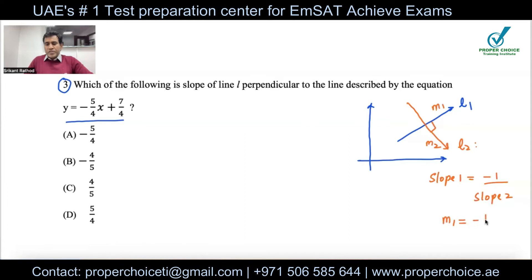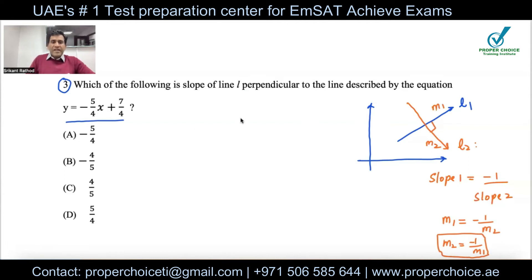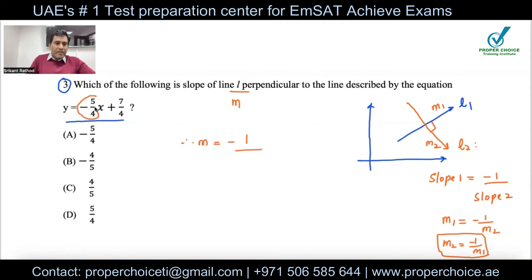It doesn't matter which slope is given; the relationship is m₁ = −1/m₂, or equivalently m₂ = −1/m₁. Applying this here: the slope of line l equals −1 divided by (−5/4), which equals 4/5. So the answer is option C.